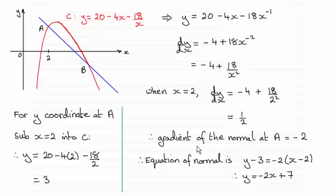Then using the perpendicular gradient rule just change the fraction - that is turn it upside down and change the sign. So changing the sign gives me a negative, turning the fraction upside down is 2 over 1 or just simply minus 2.